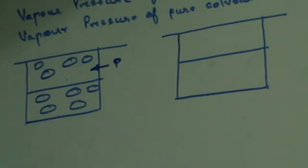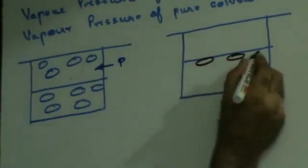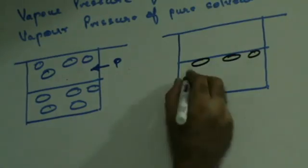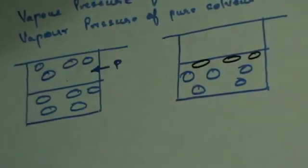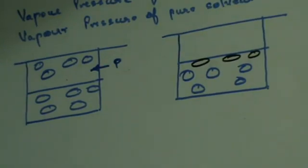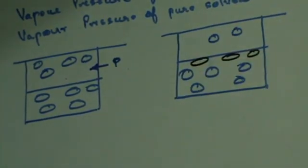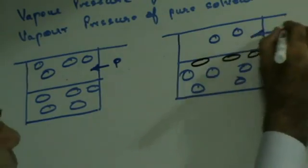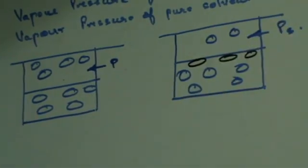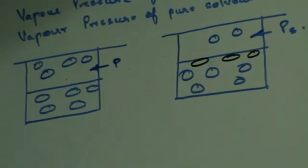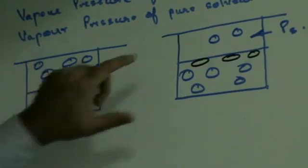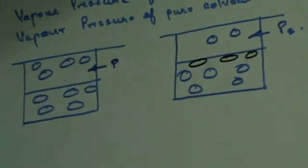Now suppose if I have a solution. In a solution, some part of the surface is going to be covered by the solute molecules. Therefore, there will be less surface area available for the solvent molecules to escape into the air. As a result, there will be fewer molecules going up, and therefore less pressure exerted on the surface of the liquid. Let's call this PS — the vapor pressure of the solution. We can clearly understand from this diagram that the vapor pressure of the pure solvent is going to be more than the vapor pressure of the solution.